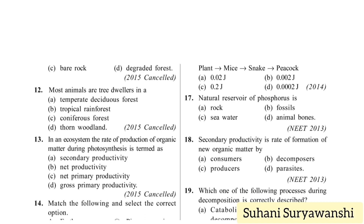Most animals are tree dwellers in which ecosystem? Options: temperate deciduous forest, tropical rainforest, coniferous forest, or thorn woodland. Since there are a lot more trees, the correct answer will be tropical rainforest.